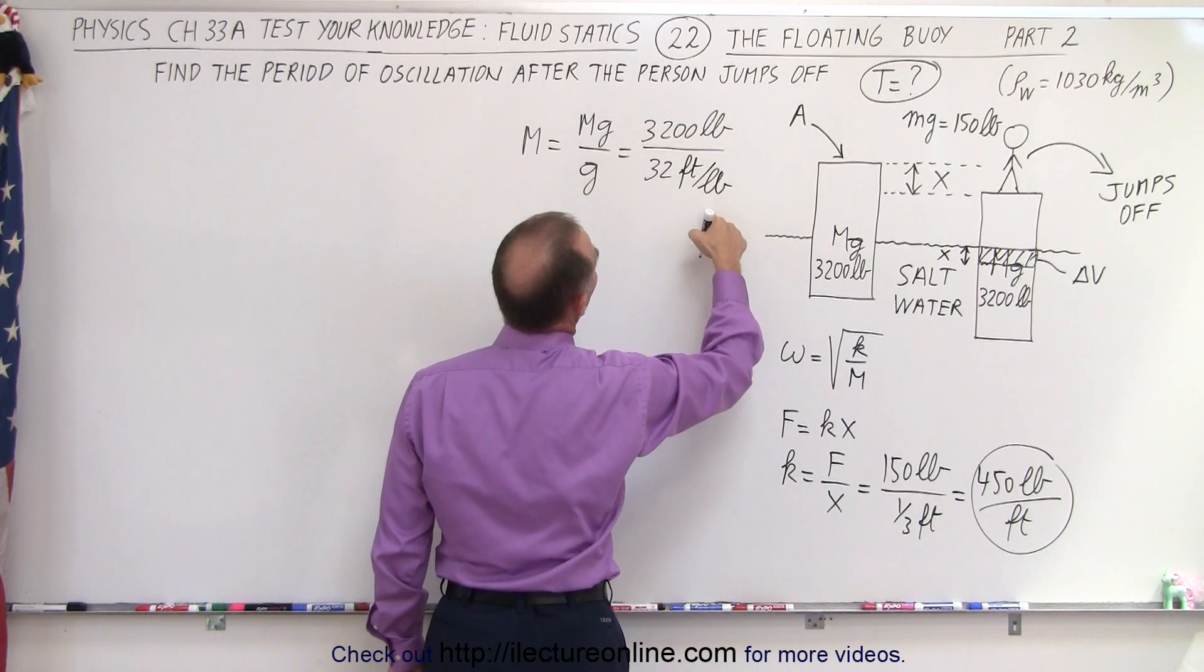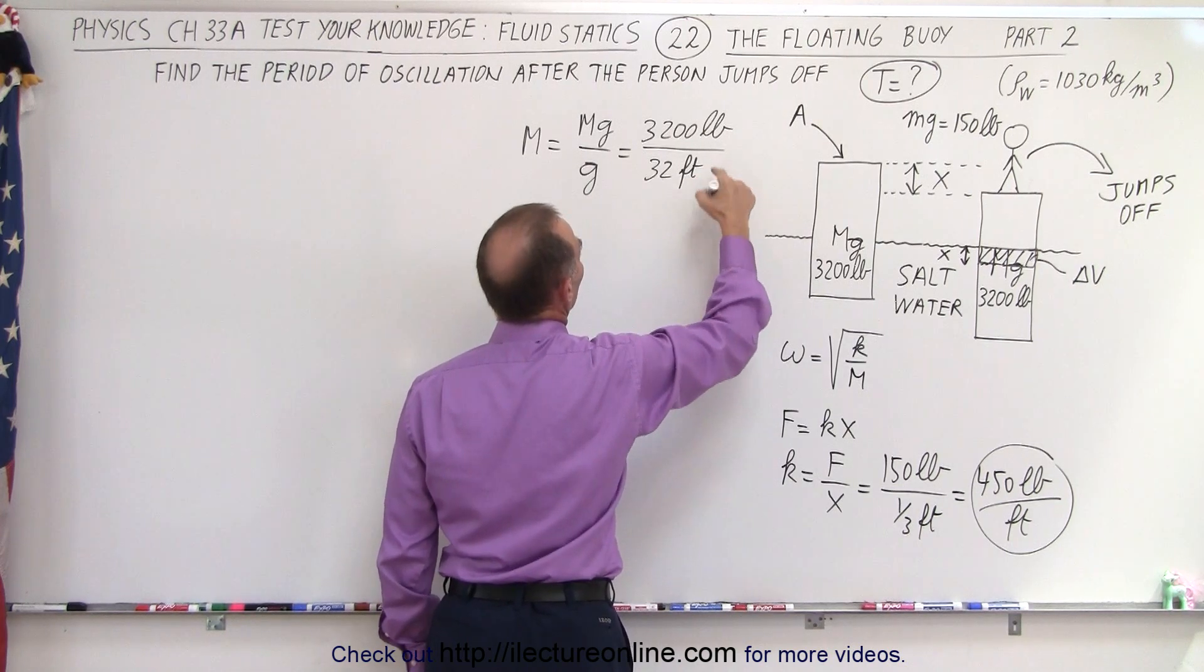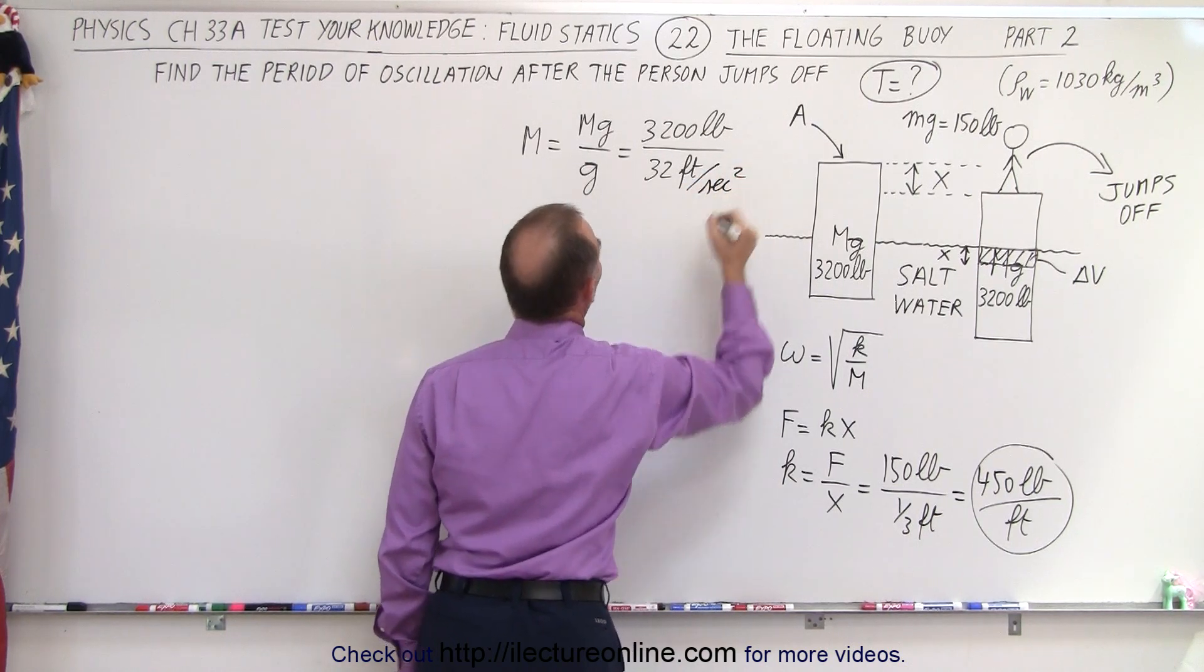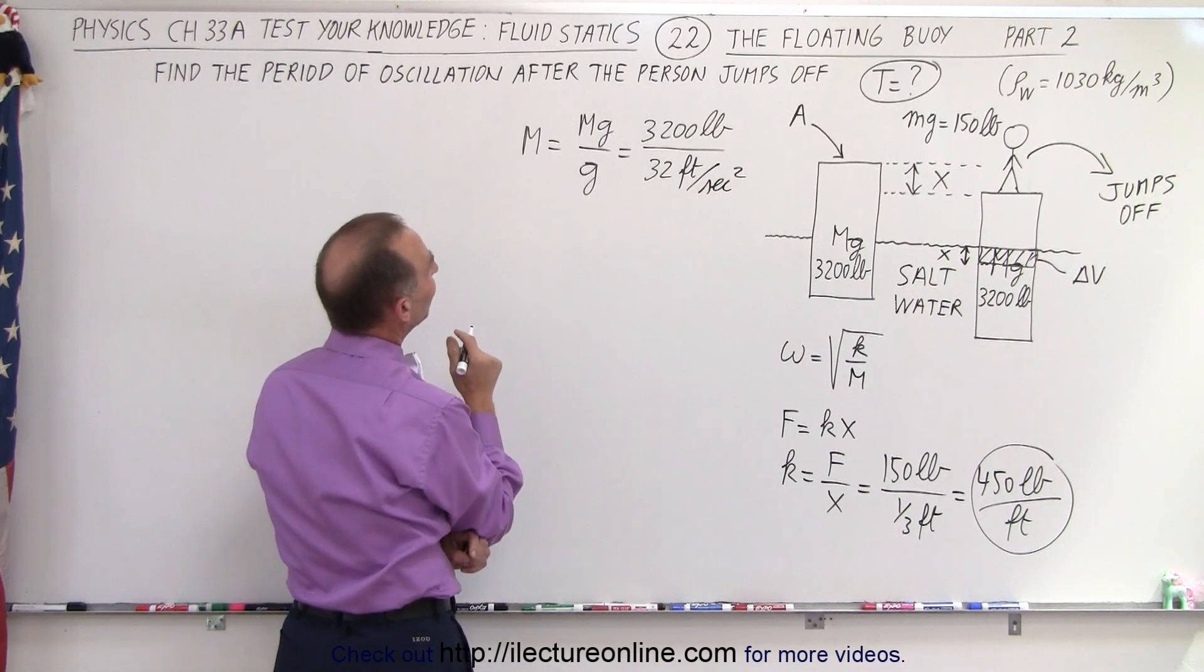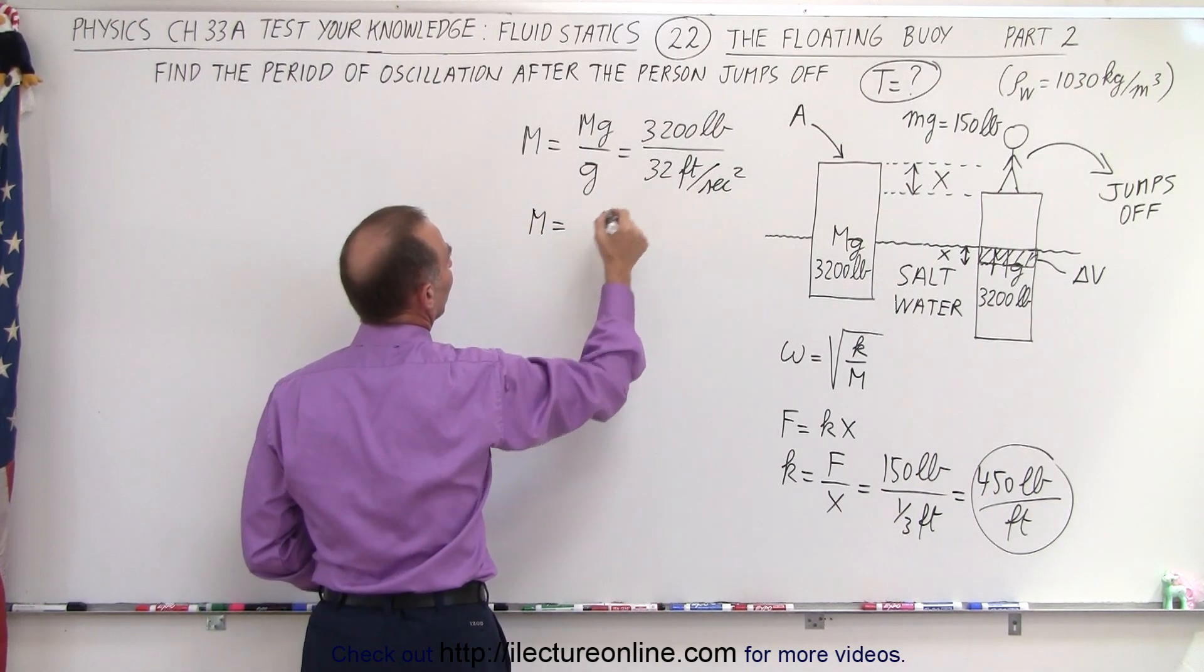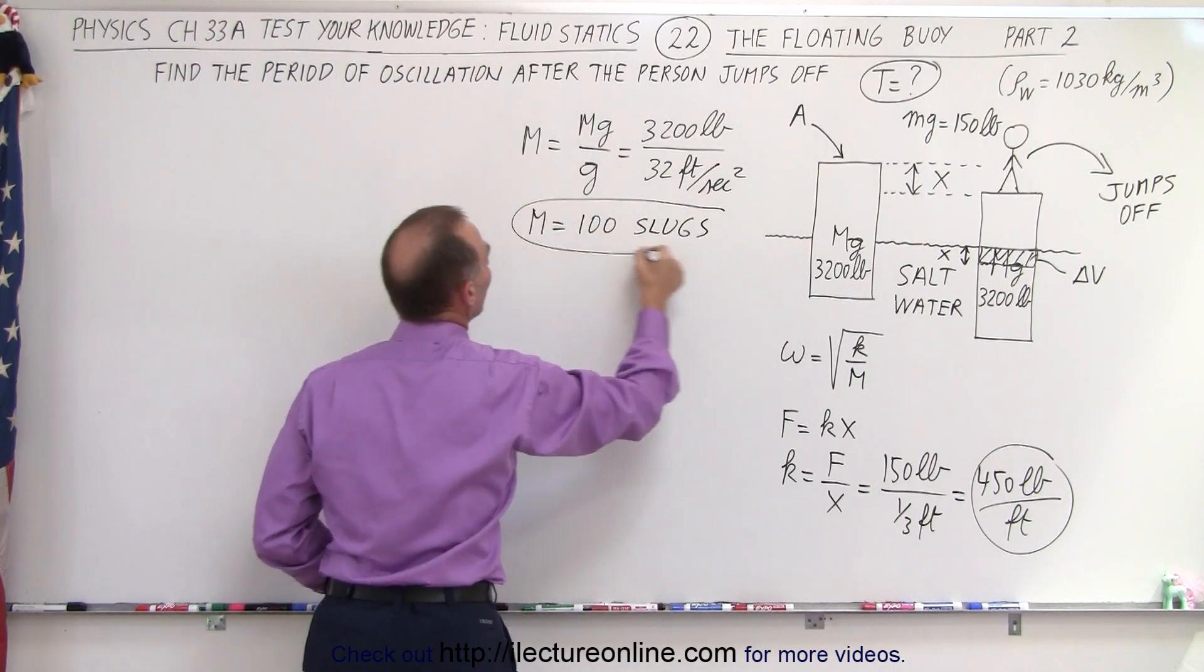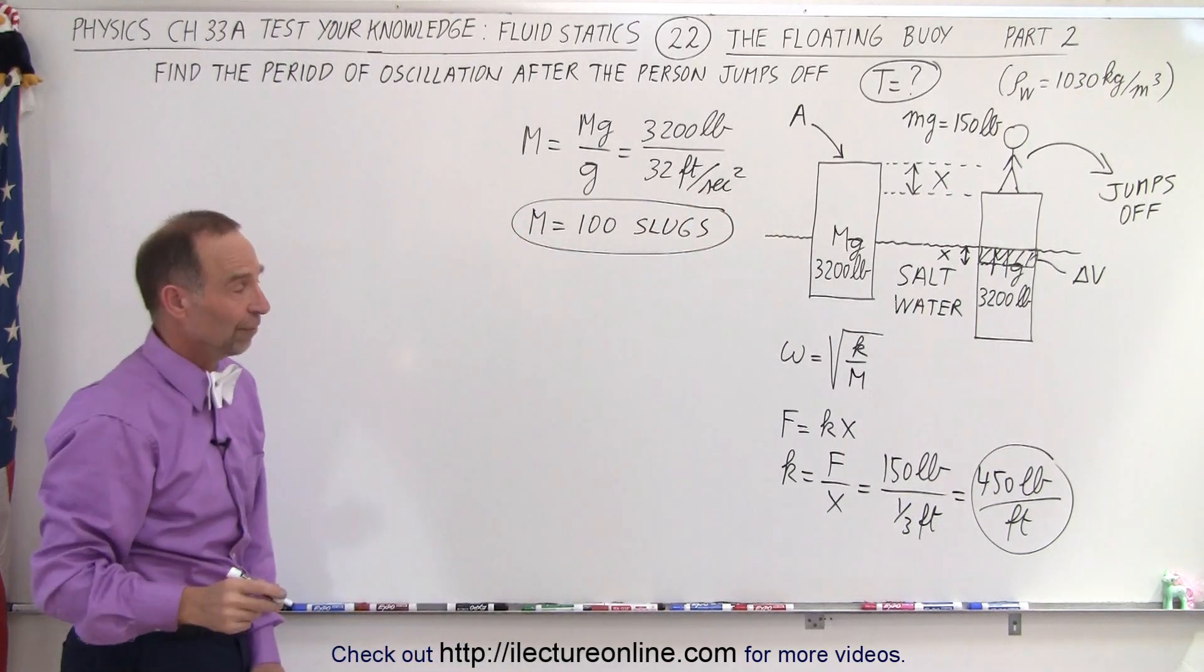That means we end up with a mass equal to 3,200 divided by 32, which is 100 slugs. Slugs is the unit of mass in the imperial system.